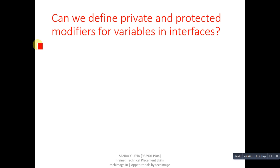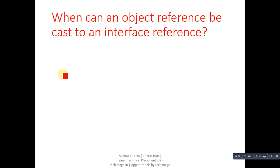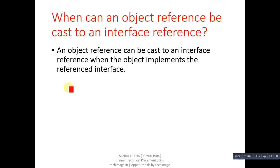Next question, can we define private and protected modifiers for variables in interfaces? Answer is no, they are implicitly public. Next question, when can an object reference be cast to an interface reference? Answer is, an object reference can be cast to an interface reference when the object implements the referenced interface.